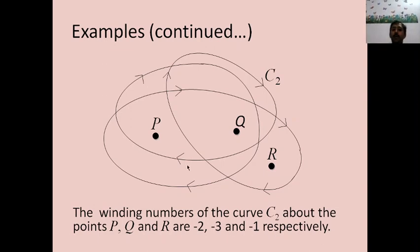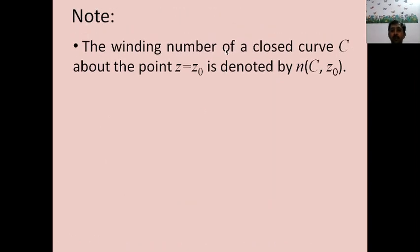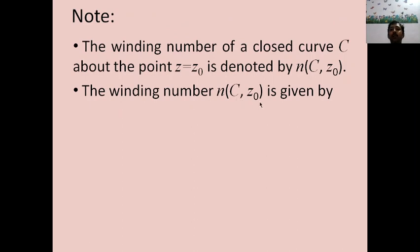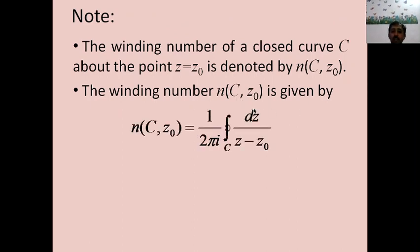This is how we define the winding number. However, practically it is not very easy to find the winding number of a given closed curve C about some point P just by inspection. So we use an important result in complex analysis. The winding number of a closed curve C about the point z = z₀ is denoted by n(C, z₀), and it is given by the formula: n(C, z₀) = (1/2πi) ∫_C dz/(z − z₀).